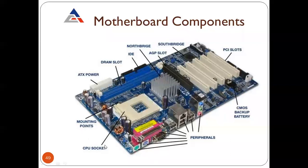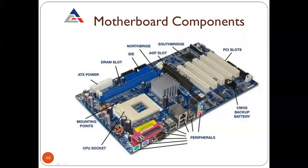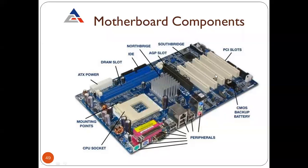On the diagram: this is the CPU socket, these are mounting points, ATX power point, these blue lines are DRAM slots (Dynamic Random Access Memory slots) — meaning memory slots. This black one is IDE (Integrated Development Environment), and this is the north bridge. This is the AGP slot — Advanced Graphics slot. This black one is the south bridge, and these white ones are PCI slots — peripheral connectors. And this is the CMOS backup battery — Complementary Metal Oxide Semiconductor.